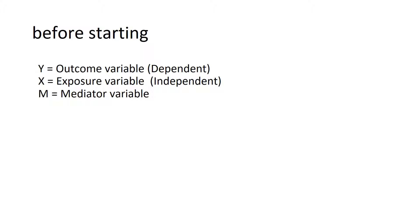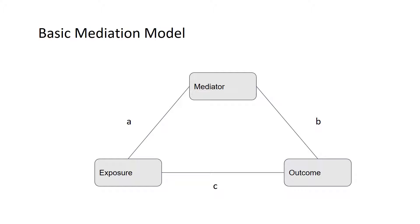In this video we use Y, X, and M. Y denotes the outcome variable, X denotes the exposure or independent variable, and M denotes the mediator variable. Let us define mediation. Basically, a mediator is the means by which an exposure variable affects an outcome. So the effect of exposure on outcome is mediated through a third variable, which is the mediator.